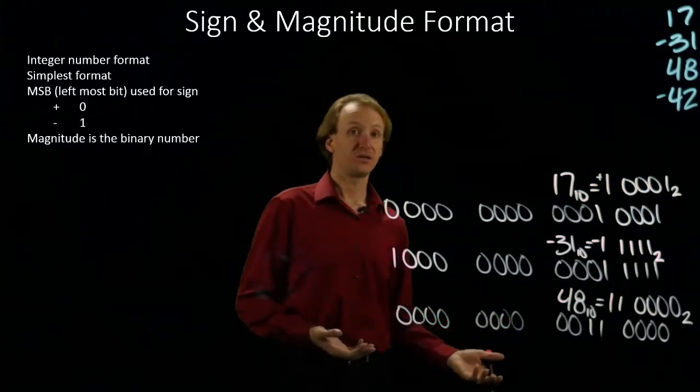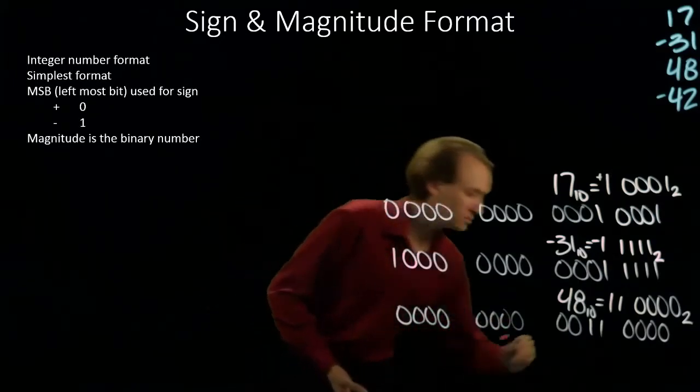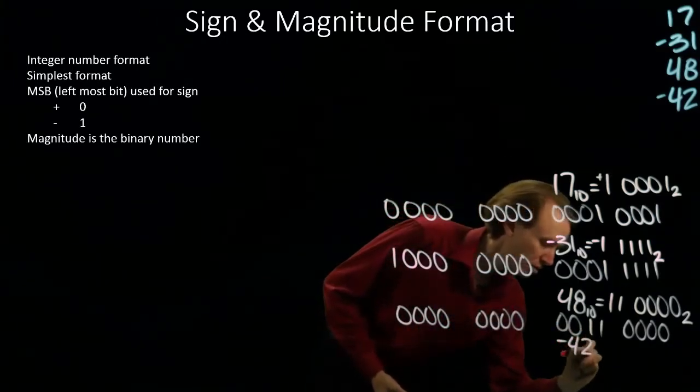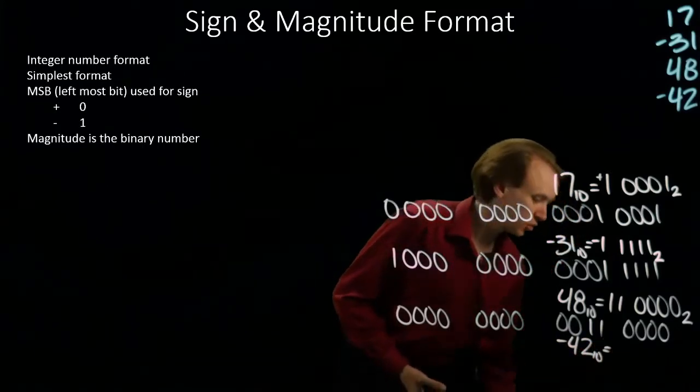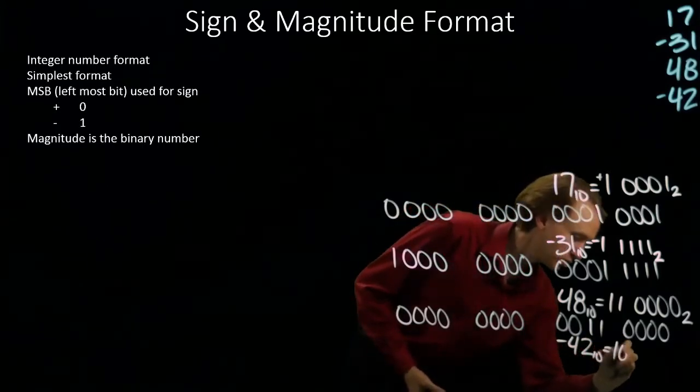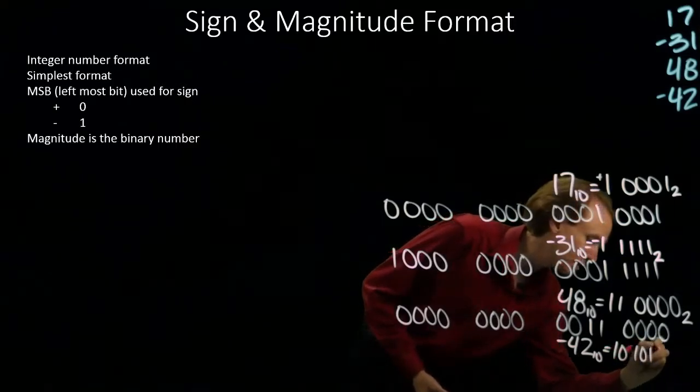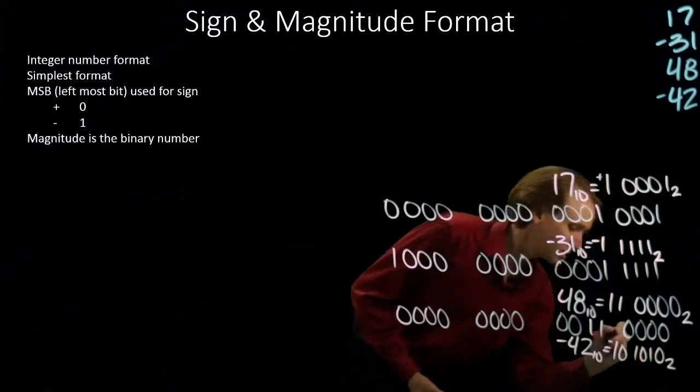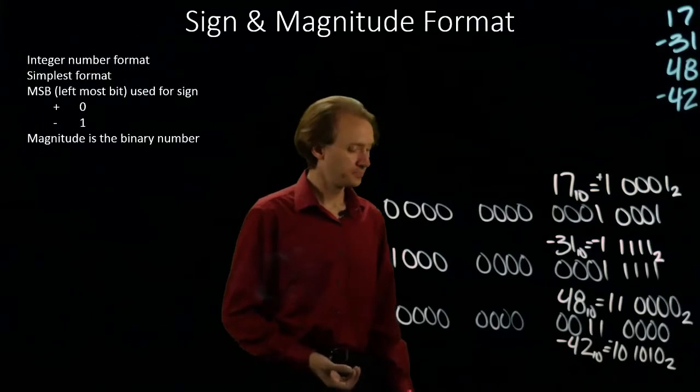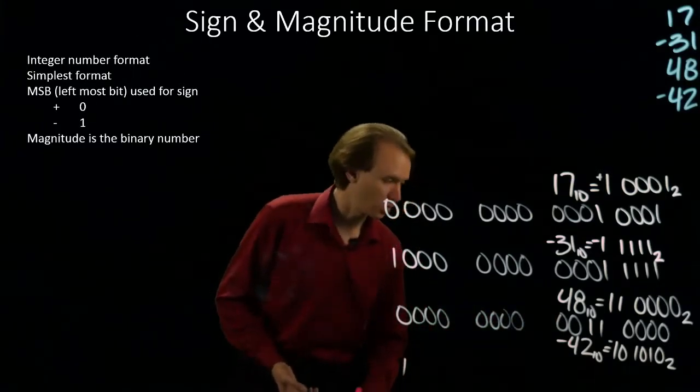The last number is negative 42. 42 is 32 plus 10, and that's a negative number this time. As a result, my sign bit is a 1.